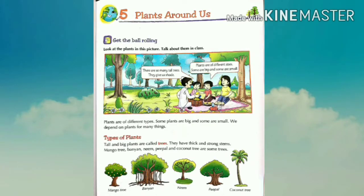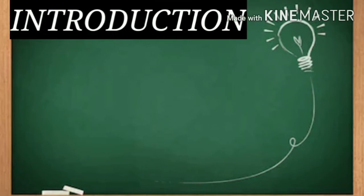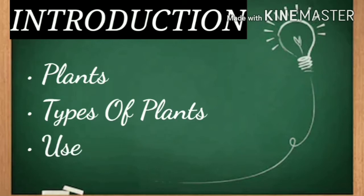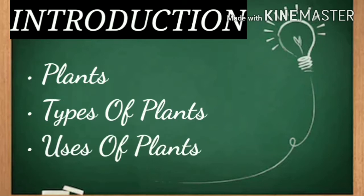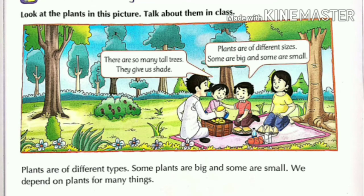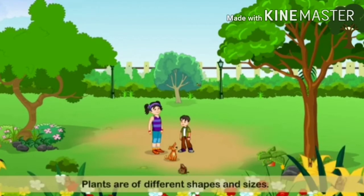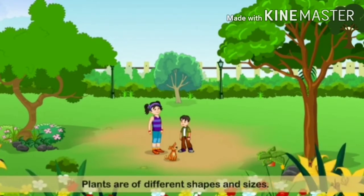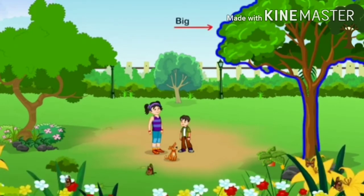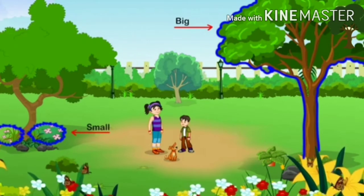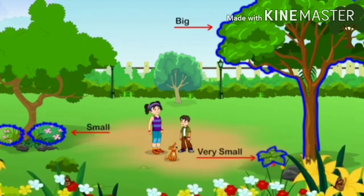First of all, I want to give you the introduction of this lesson. In this lesson, we will learn about plants, types of plants, and uses of plants. Now open your book. It is written that plants are of different types. Some plants are big and some are small. We depend on plants for many things. Plants are of different shapes and sizes, and we all depend on plants.